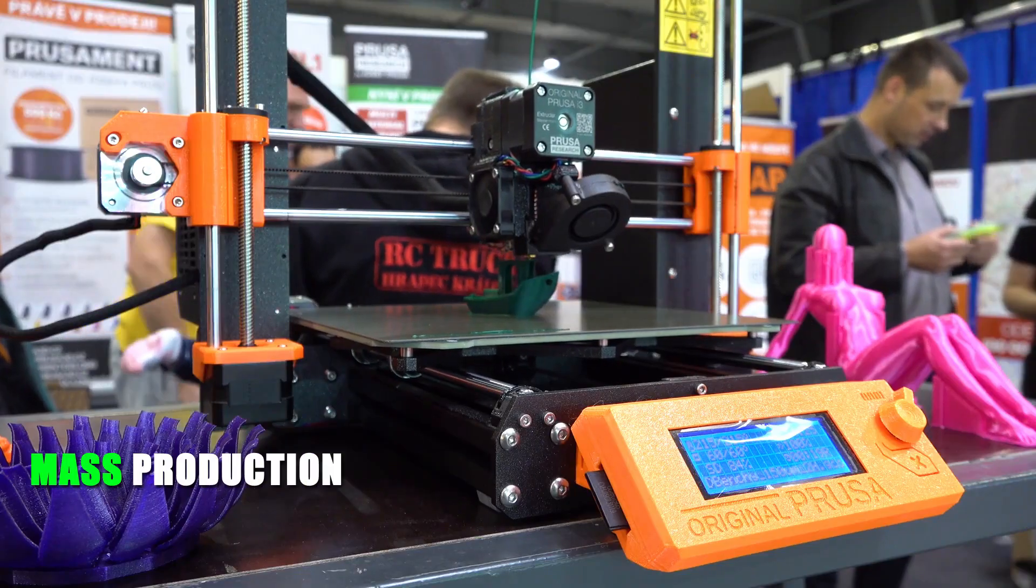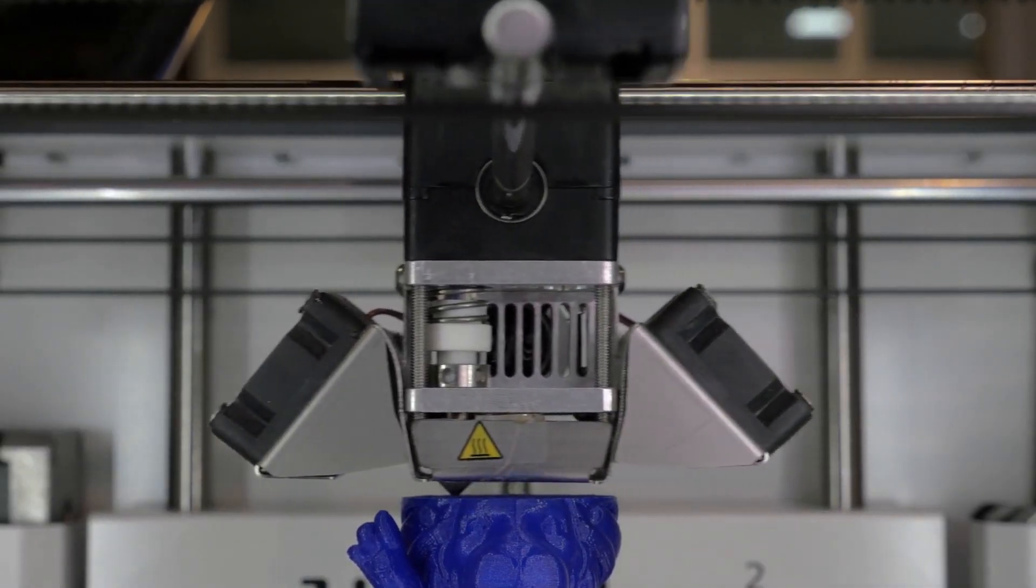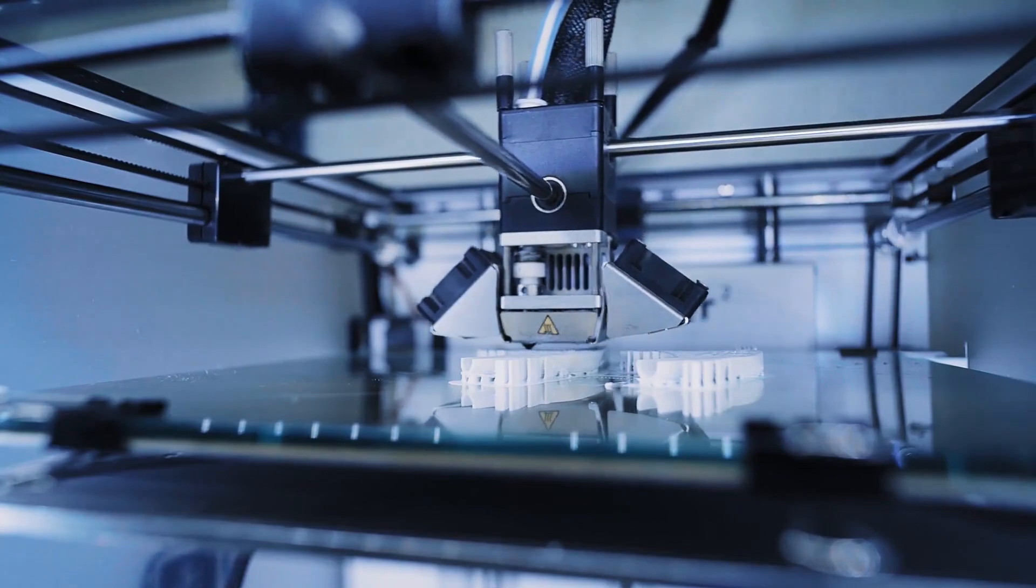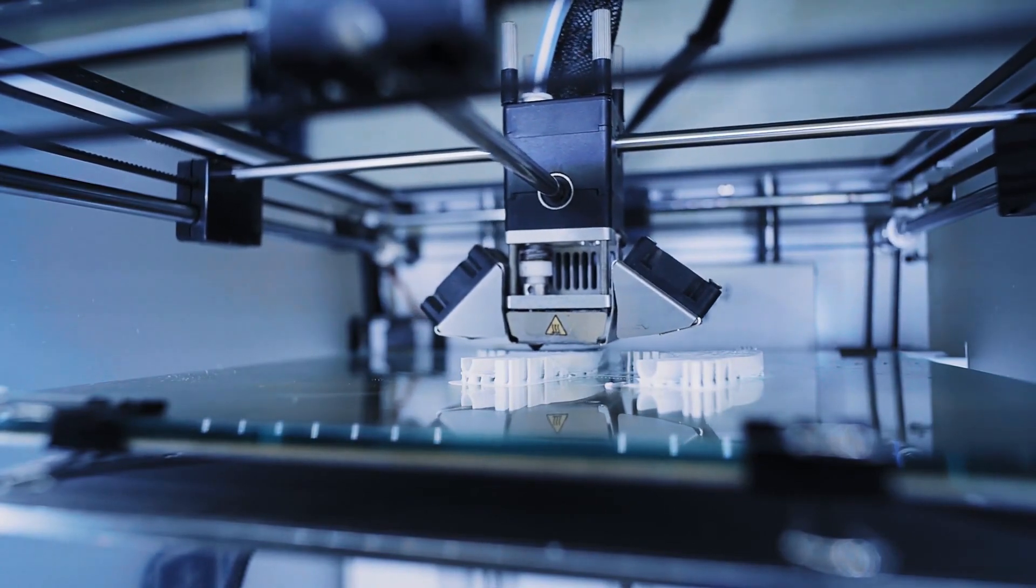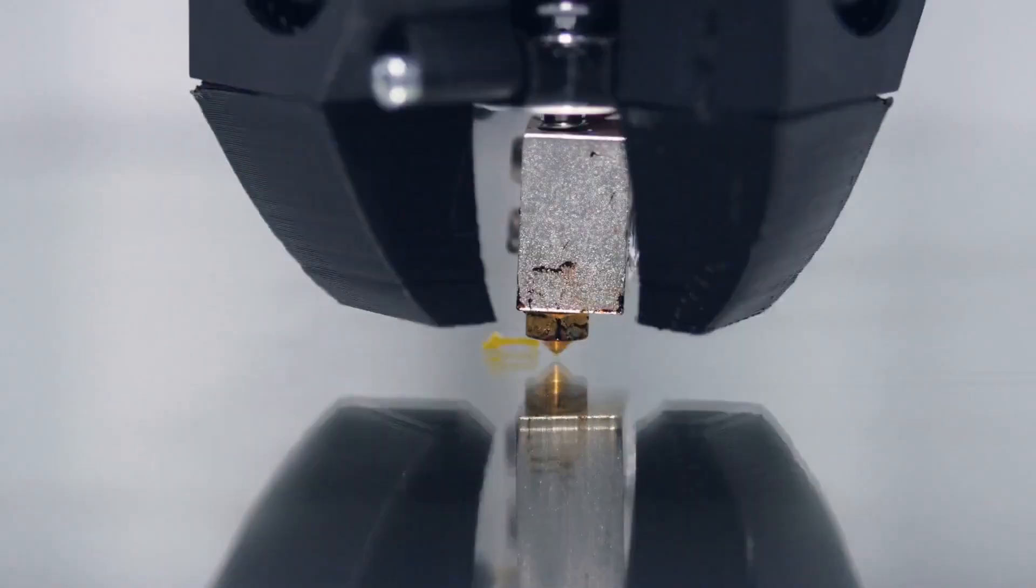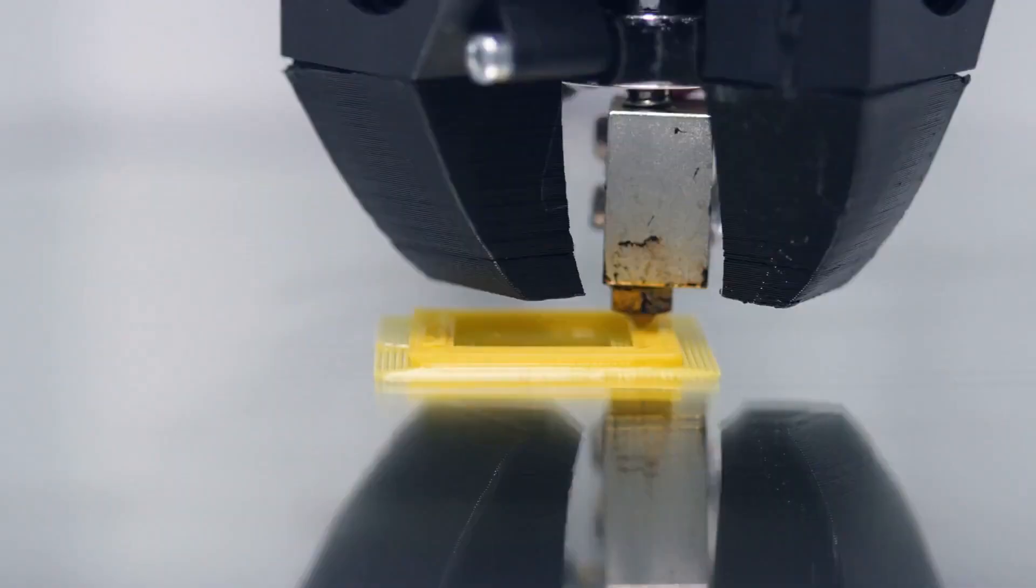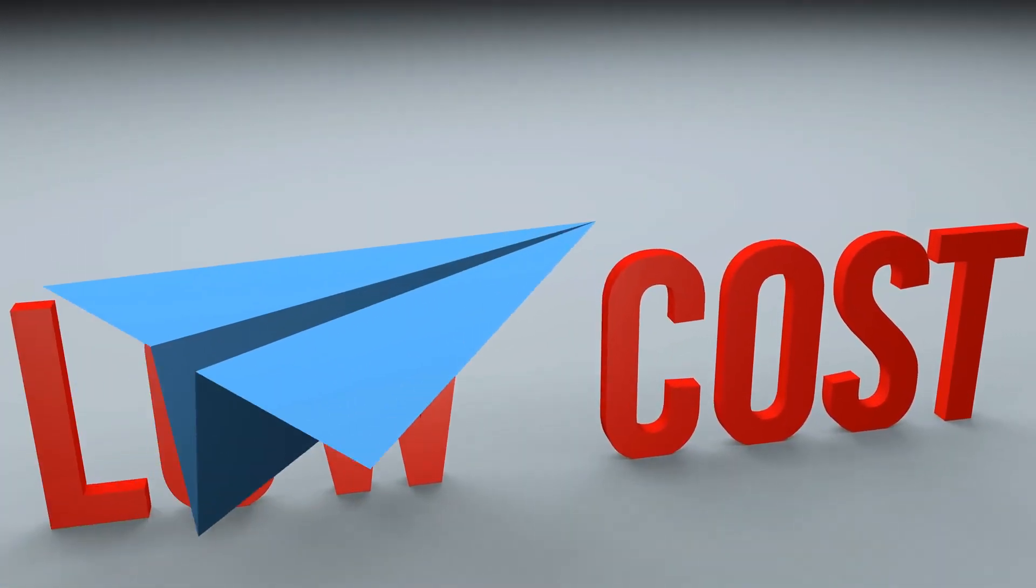Mass production with 3D printing. One of the most significant advantages of 3D printing in mass production is the ability to create complex geometries that are impossible with traditional manufacturing methods. This allows for the creation of lightweight structures that can reduce material usage and ultimately lower costs.